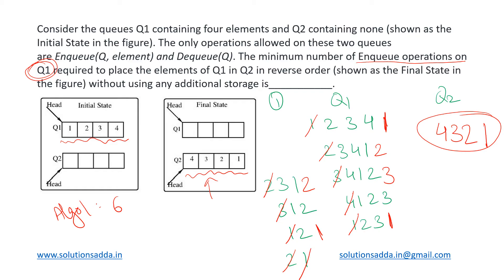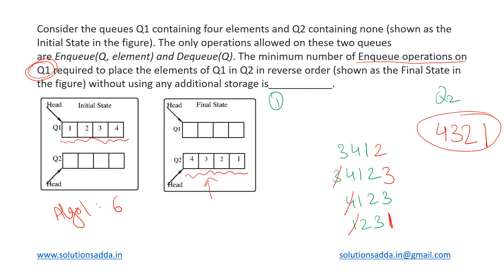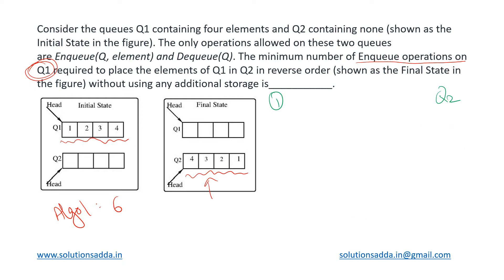Now let us look at Algorithm 2. In this algorithm, instead of enqueuing elements back into Q1, we will be enqueuing them into Q2. Q1 initially has 1, 2, 3, and 4. In step 1, we dequeue 1 from Q1 and enqueue it into Q2. In the next step, we dequeue 2 and enqueue it into Q2. Q2 now has the elements 1 and 2.